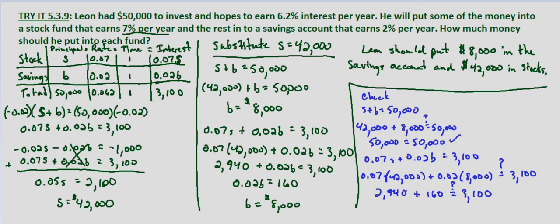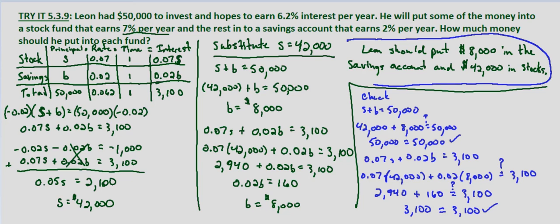If we add 2,940 plus 160, we do get 3,100 — verified in our second equation as well. So Leon should put $8,000 in the savings account and $42,000 in stocks.